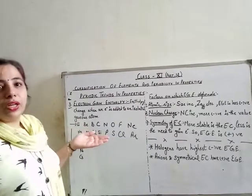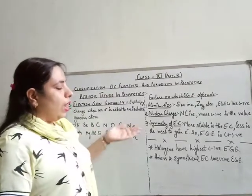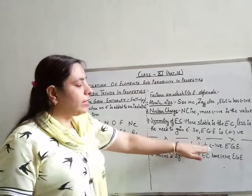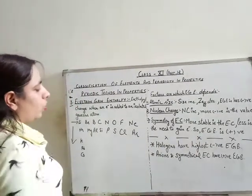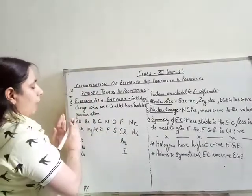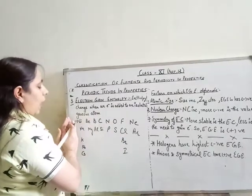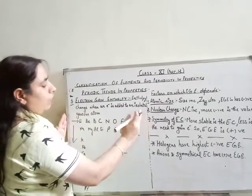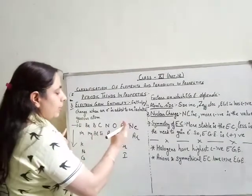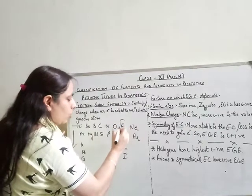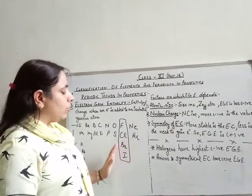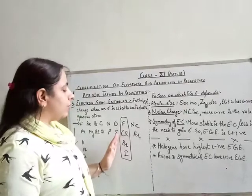Just as there were exceptional cases in ionization enthalpy, there are exceptions here too. Halogens — group 17 containing fluorine, chlorine, bromine, iodine — have the highest negative electron gain enthalpy. Because going across the period their atomic size is small and effective nuclear charge is large, the electron gain enthalpy value should be most negative for this group.